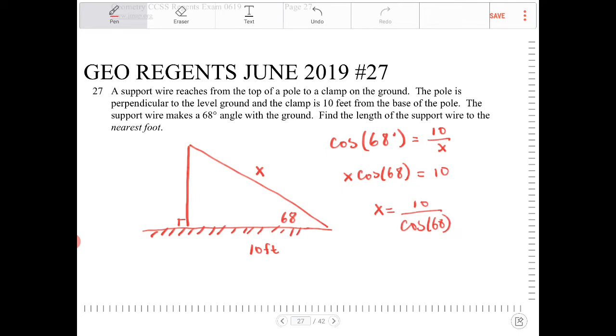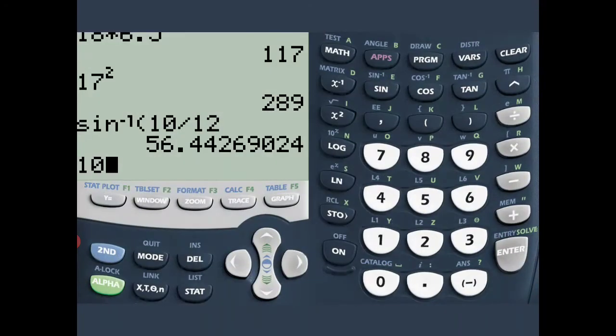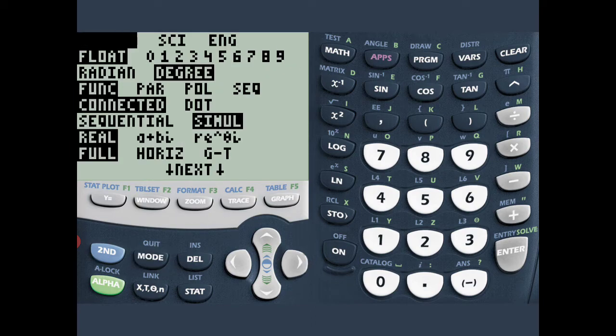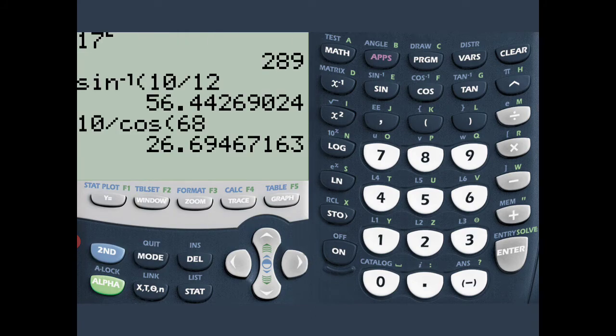So I got to enter this in the calculator. Let's do that. So 10 divided by cosine 68. Make sure your calculator setting is in degrees by the way. So we got 26.69.